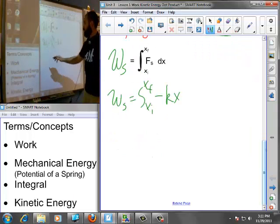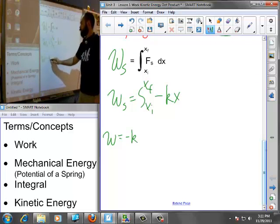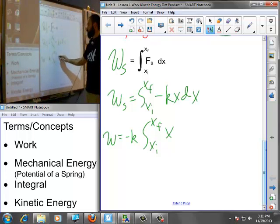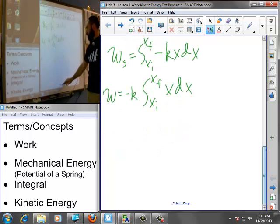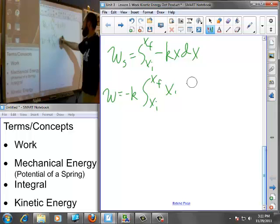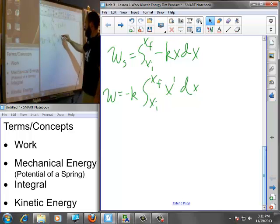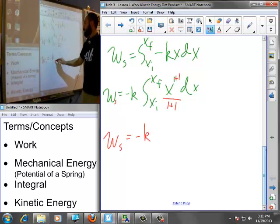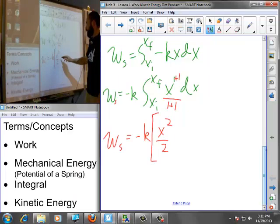When we do this, I can now pull the k out to the front because it's a constant. So I really just have from xf to xi, x dx. But the integral of x is just simply, it's basically like saying we have x to the 1. So I'll take x to the 1, I'll add 1 to the power of it, divide by the power plus 1. So the work done by a spring in this case, negative k, and now I have my function of x squared over 2. And we're evaluating from xi to xf.